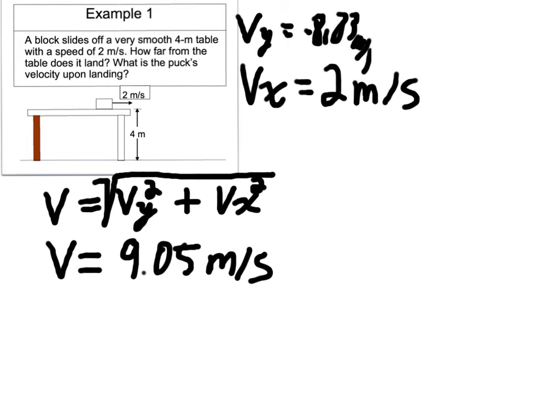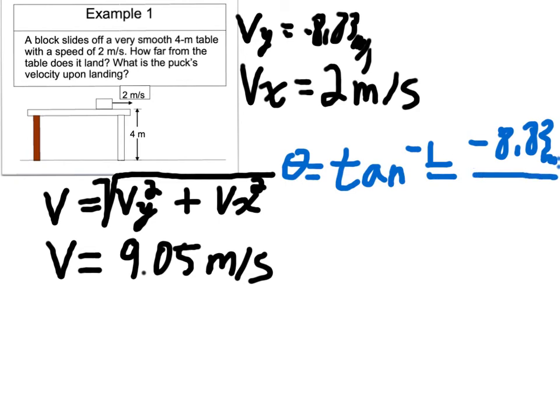Now I need to know its angle. So this is going to be inverse tangent for our angle. Angle equals inverse tangent of y over x and I do keep the signs, negative 8.83 meters per second over 2 meters per second. So tangent can handle negatives and positives if it knows what to do. And then I will figure out where this calculator has an inverse tangent button and so my angle is negative 77.24 degrees.